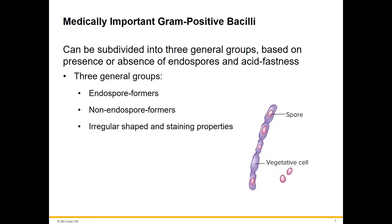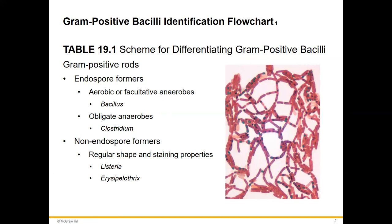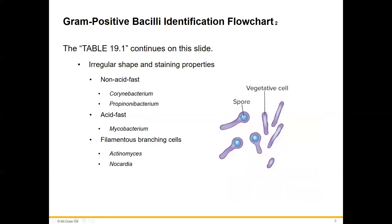Categories we've covered so far: staph, strep, and Neisseria. Now our medically important gram-positive bacilli — rod-shaped bacteria that stain purple. We have three general groups: ones that form endospores, ones that do not, and ones that have irregular shapes. The endospore formers are Bacillus and Clostridium; non-endospore formers are Listeria and Erysipelothrix; and irregular shapes include Actinomyces and Nocardia.